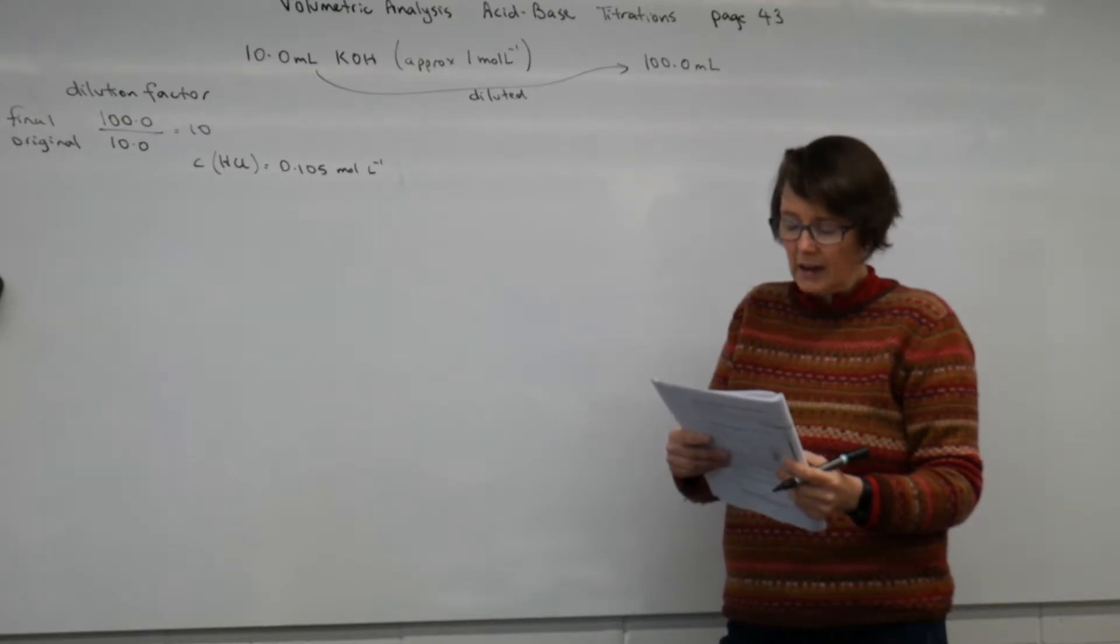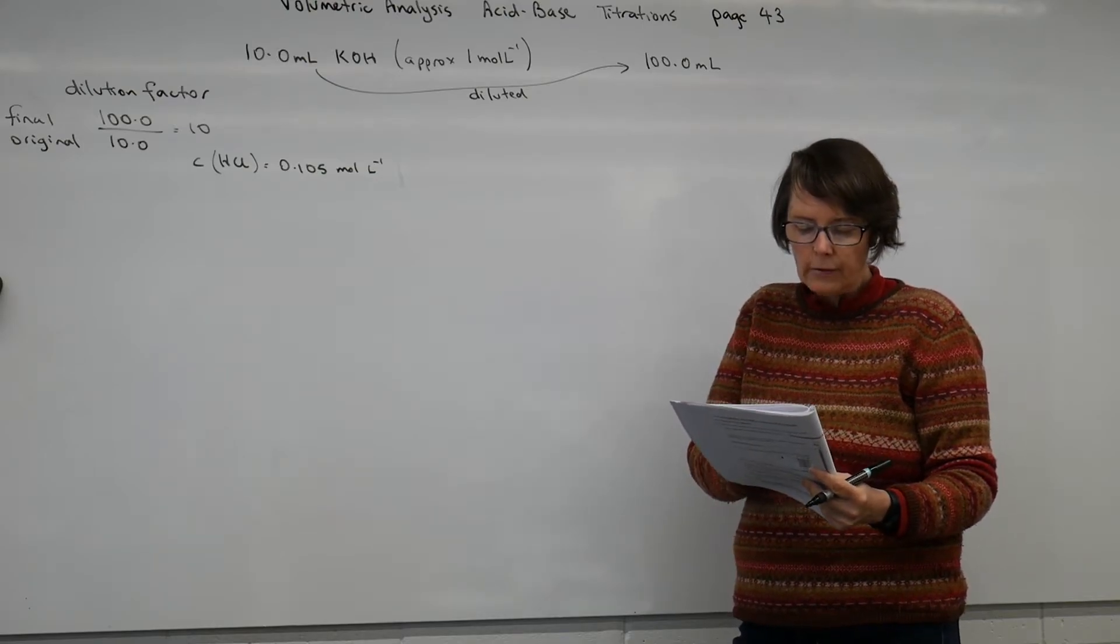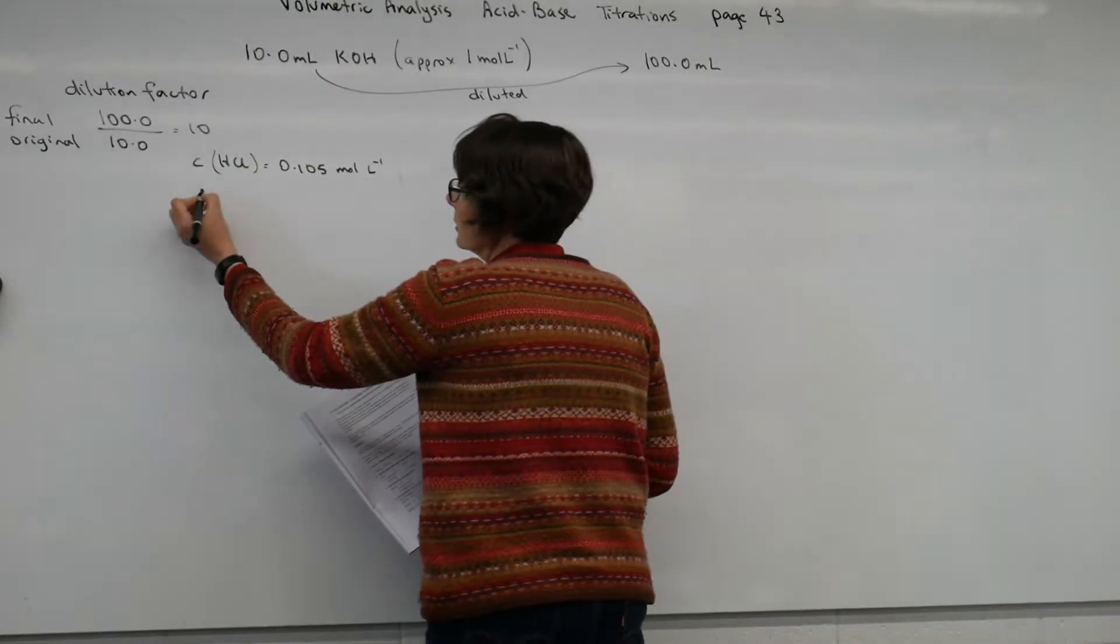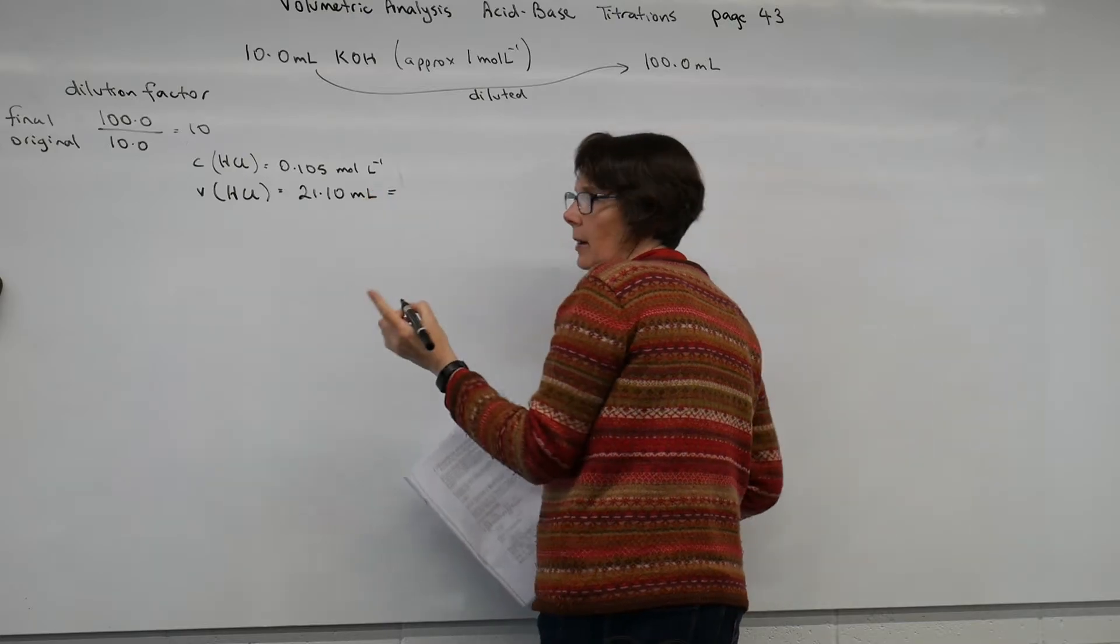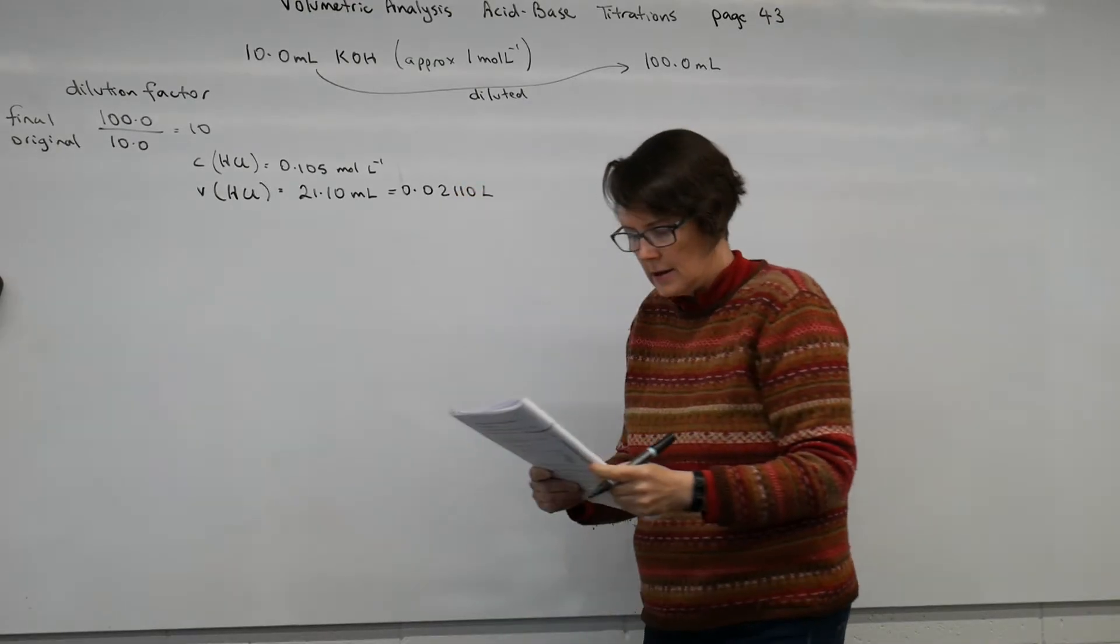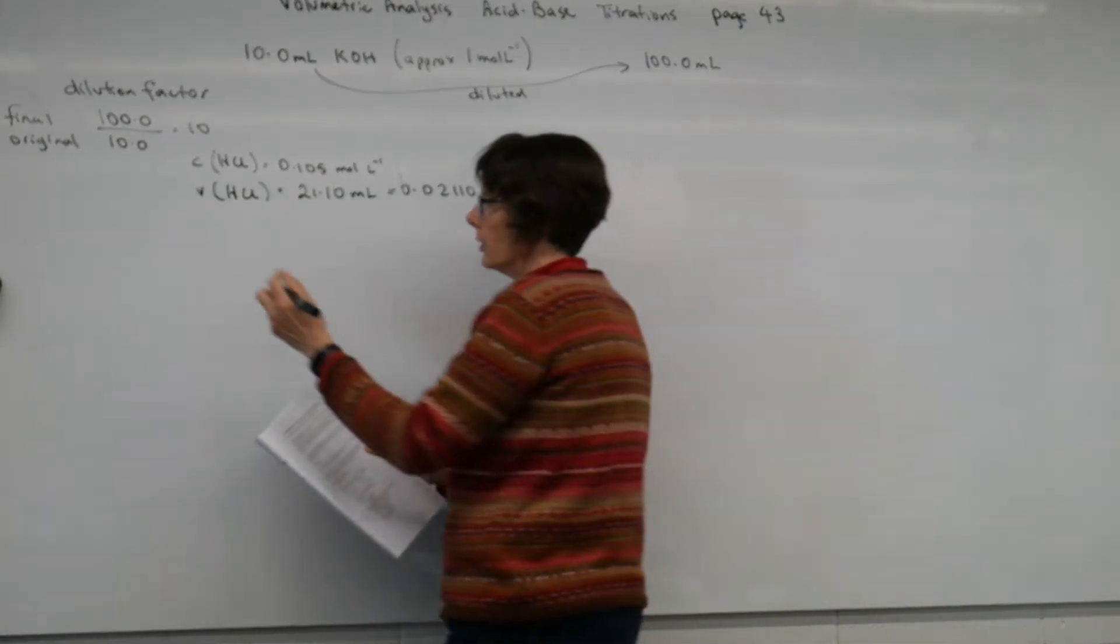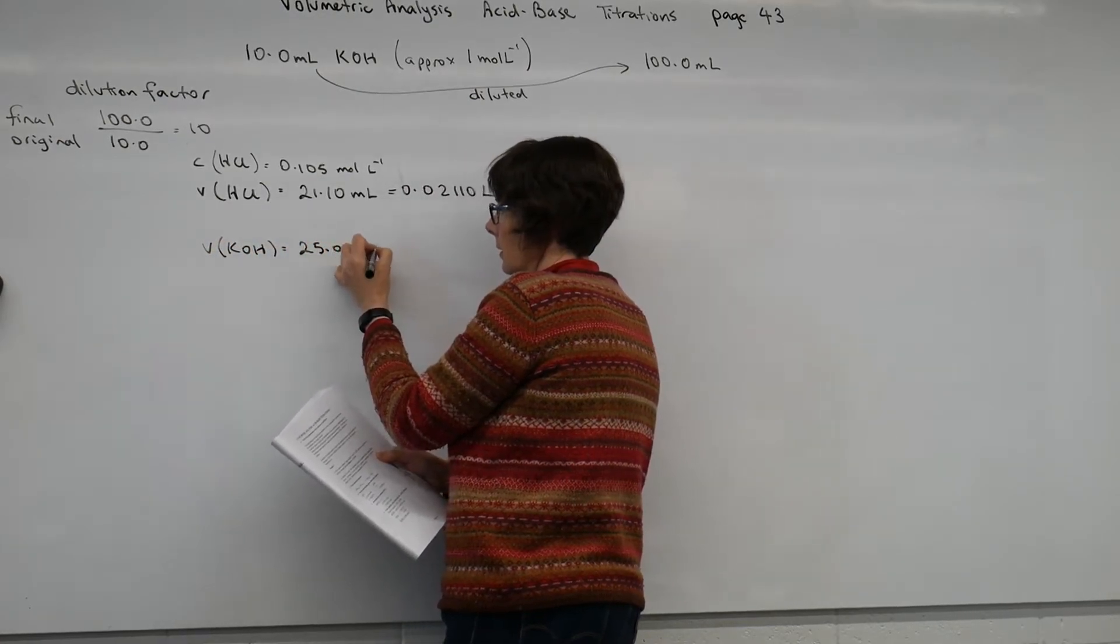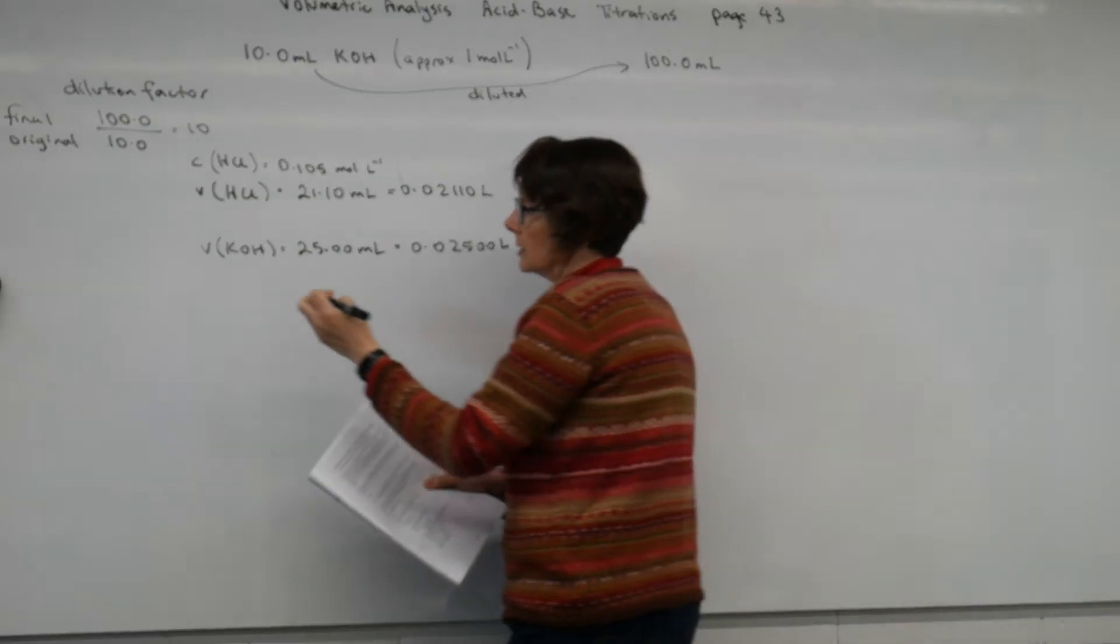And it's used to standardise this potassium hydroxide solution. On average, 21.10ml of the HCl is needed. So that's a volume. And it was 21.10ml. But I have to change that to litres. And it was needed to neutralise a 25ml aliquot of potassium hydroxide.